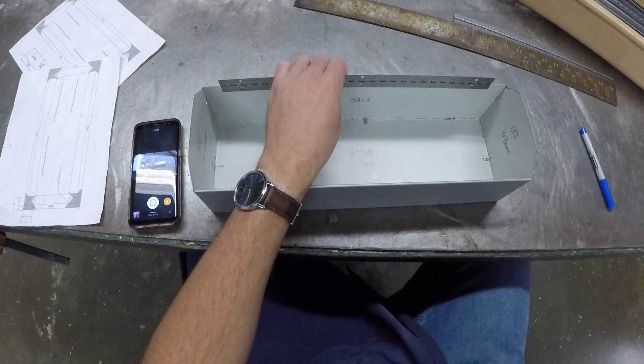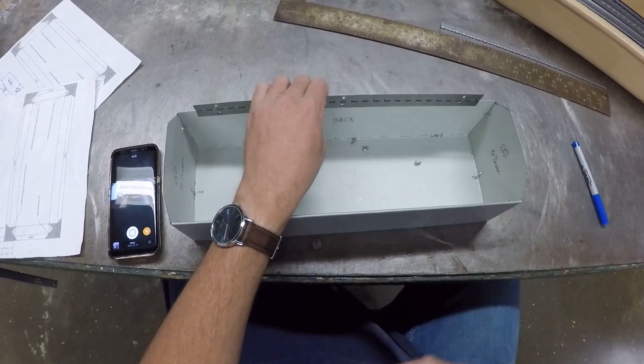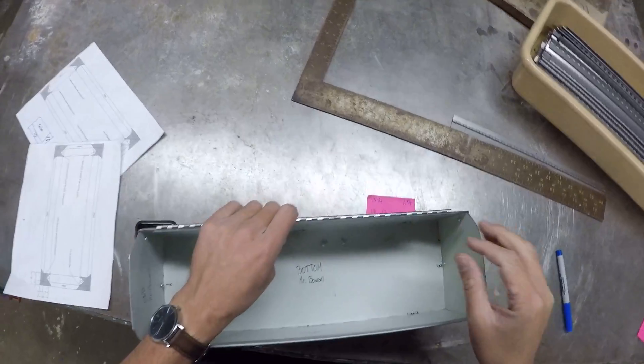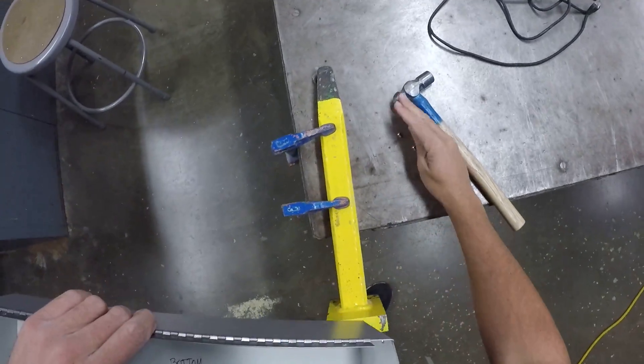So now we're going to take our one, two, three rivets from Mr. Bowen. We're going to keep track of all those rivets. I'm going to set them next to the anvil here.